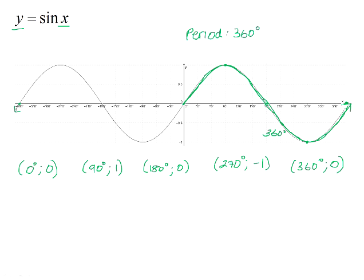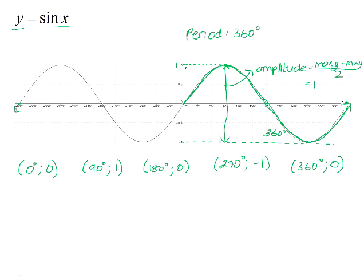Looking at the basic y equals sin x graph, it has its maximum point at 1 and its minimum point at negative 1, so it lies between 1 and negative 1. We call this vertical stretch the amplitude. Amplitude is equal to your maximum y minus your minimum y, divided by 2. In this case, it would be 1 minus negative 1, divided by 2, giving an amplitude of 1. So the basic sin graph has a period of 360 degrees and an amplitude of 1.